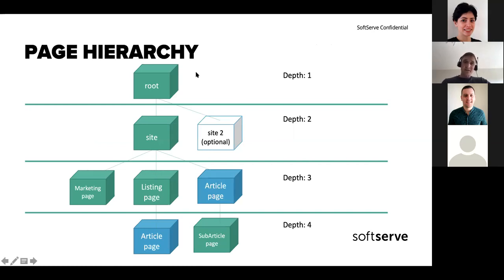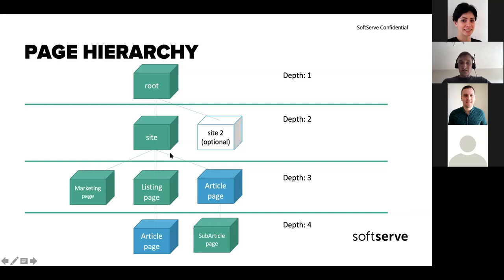Pages have hierarchy. There are page instances — not just definitions. There is always one instance of the root page, multiple site pages depending on how many sites you want to support, and all content pages, listing pages, and article pages. An article page can be at different levels — linked from the site page or below. We define rules specifying which pages can have which sub-pages, and we can define all these rules in our page class.